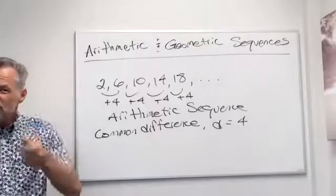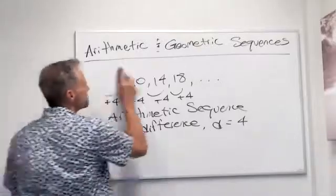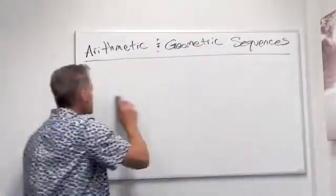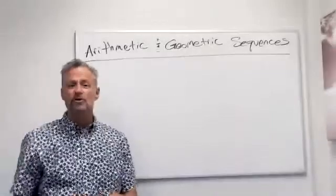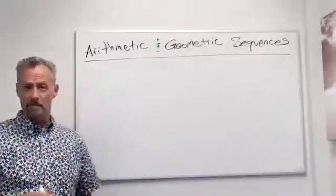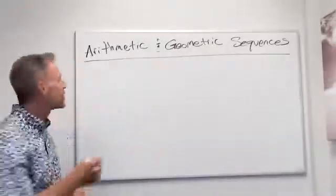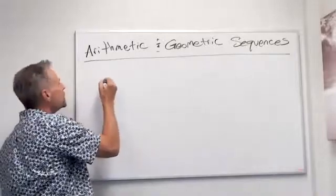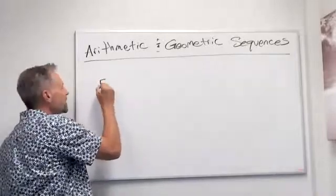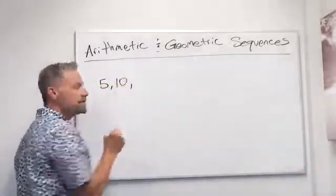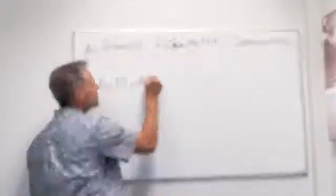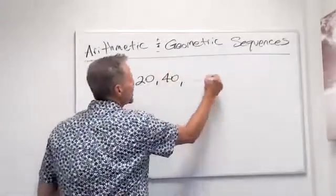Okay, that's arithmetic. What's geometric? With geometric, what you actually do is multiply by some common number. For example, say I start with the number 5, then 10, then 20, 40, etc.